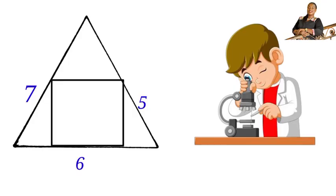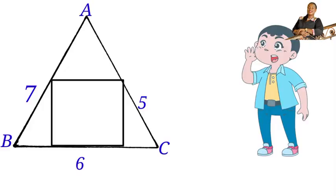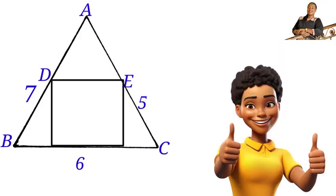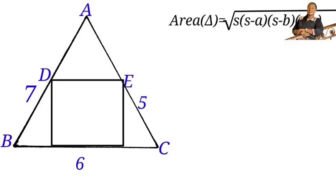Let us label this triangle ABC, and let us call this point D and this point E. To find the area of this triangle, the best formula to use is Heron's formula. So I will use Heron's formula to find the area of triangle ABC. The formula uses s equals a plus b plus c all over two.